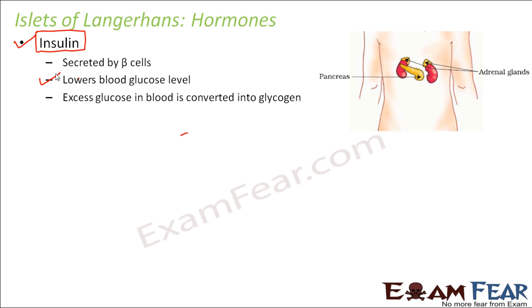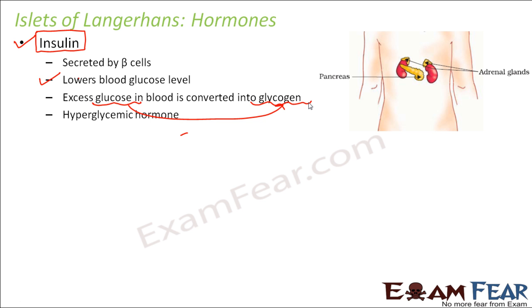How does insulin reduce the blood glucose level? Whatever extra glucose is present in the blood is converted into glycogen and stored in the body. Glycogen is a storage form, so that during an emergency situation it can be broken back into glucose and utilized by the body. In a very similar way, there is another hormone called glucagon, which is secreted by the alpha cells.